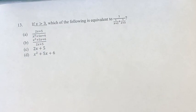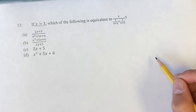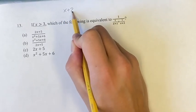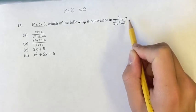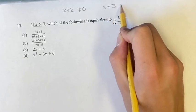So the reason we have this information is because when you're dividing by x plus 2, x plus 2 cannot equal 0. When you're dividing by x plus 3, x plus 3 cannot equal 0.